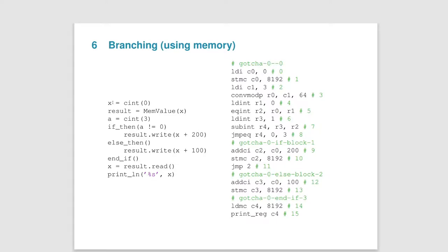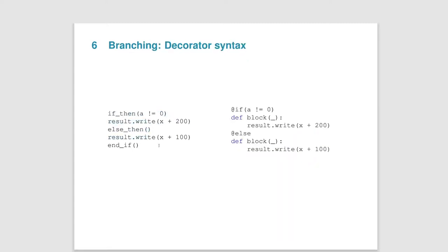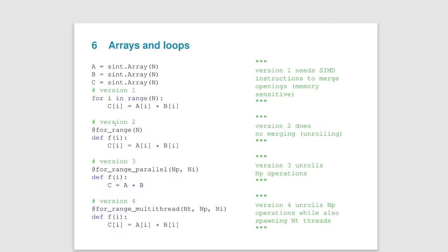This is where memory comes into play. Here we've written again the same program but this time the correct one using memory values. We define x and assign it as sint(0), then we store x in memory. Whenever we want to write to memory at the same location we can use the result.write function. This program will actually compile and have the behavior that we wanted. Then in the end we get back the result using the read function on the memory location, put that into x, and we can then print this x value. You can actually write the same piece of code using the decorator syntax in Mamba, and it may be more obvious that everything inside the if statement is a new block.